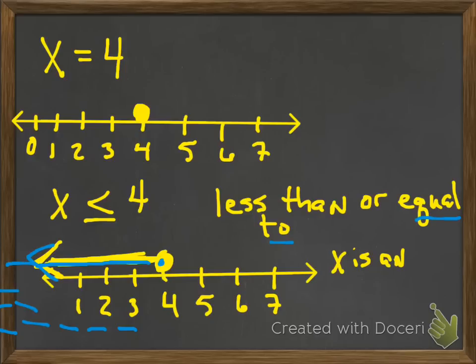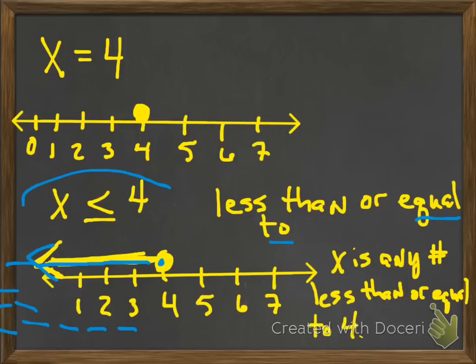This right here represents every number going this way forever and ever that is less than four. But I'm also saying equal to, so I include the four. Hopefully, you'll understand that. If you don't, then ask questions. Make sure to feel free to ask. Now, translating this, that's what it's saying. x is any number less than or equal to four. That's my translation. That's my understanding. This right here is a sentence saying that.